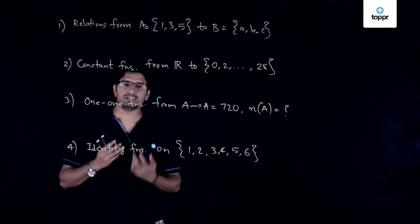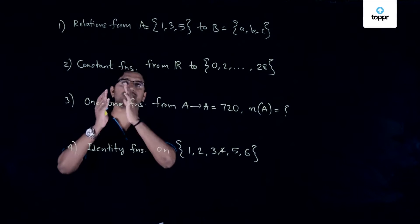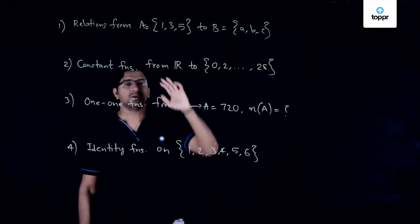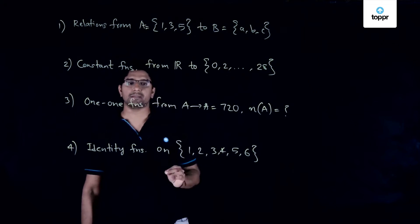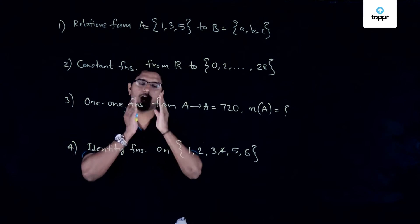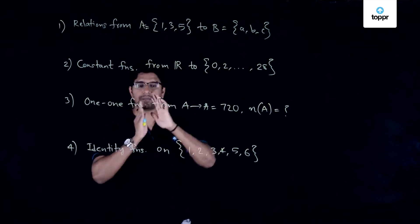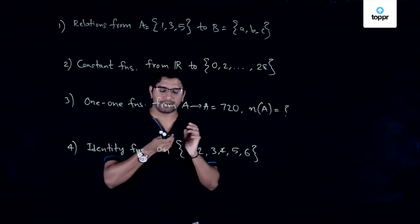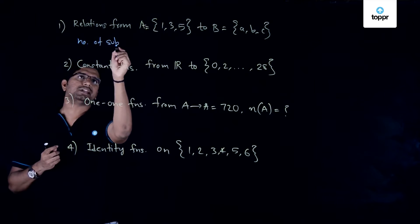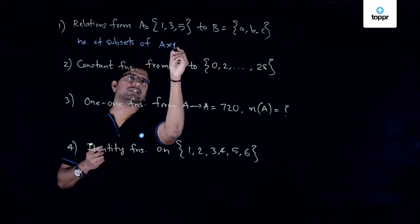Looking at this problem involving sets, relations and functions, the first part asks for the number of relations from the set {1,3,5} to the set {A,B,C}. Whenever one discusses the concept of relations, remember it as the number of subsets of the set obtained by the cross product of the two sets. So we need to compute the number of subsets of A cross B.